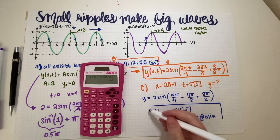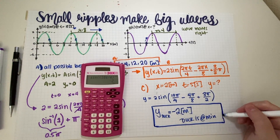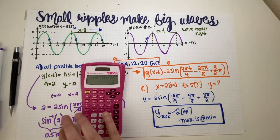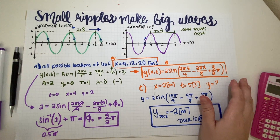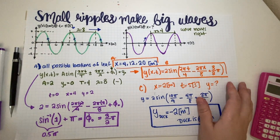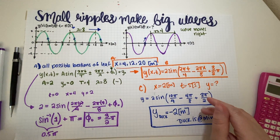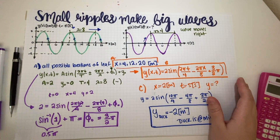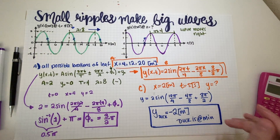That's the end of the problem. Honestly, it wasn't that hard — I don't understand why students were so unraveled by it. Once you have enough practice, every problem follows the same procedure: find λ, find the period, find velocity if needed, and go from there. Small ripples make big waves — if you found this video helpful, please leave a like, and I'll see you on the next video. Bye!